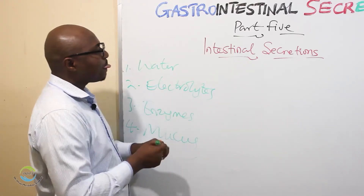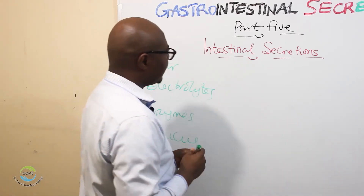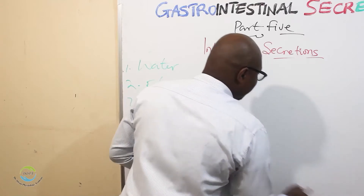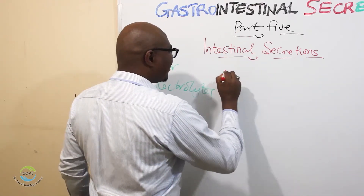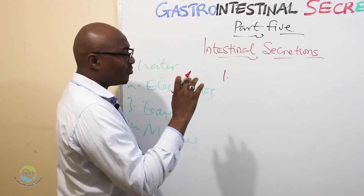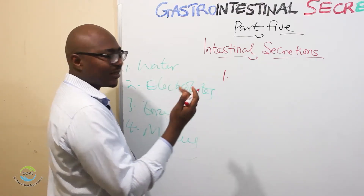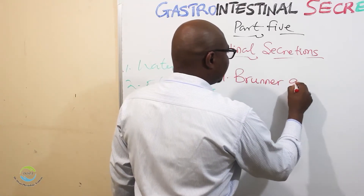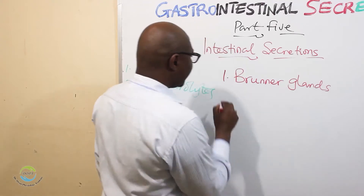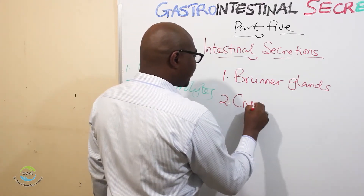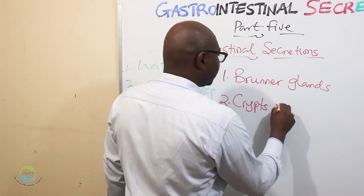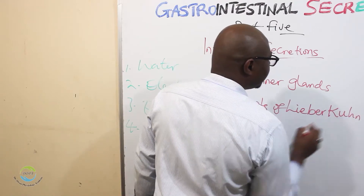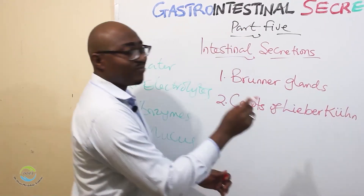We'll talk about the enzymes. In the intestinal secretion, the duodenum especially has a special gland called the Brunner glands. Then we also have the crypts of Lieberkühn.